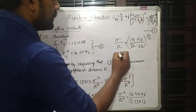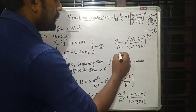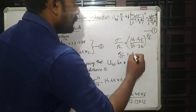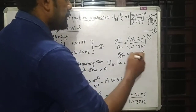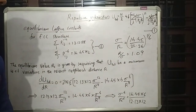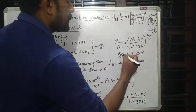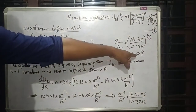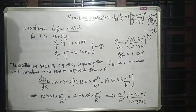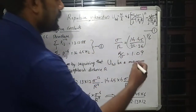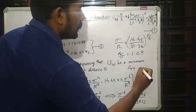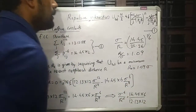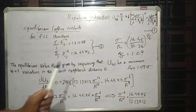From this relation we get R over sigma equals 1.09. We take this minimum distance as R naught. So R naught over sigma equals 1.09 at equilibrium, meaning R naught equals 1.09 sigma.